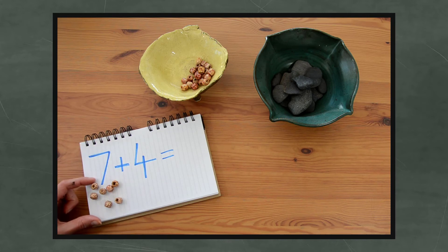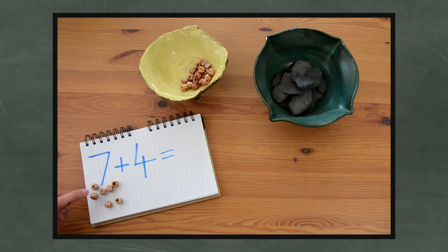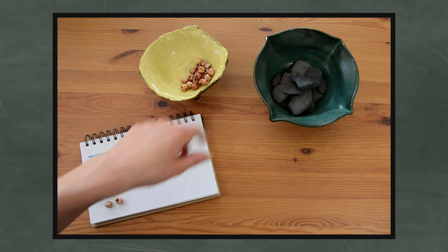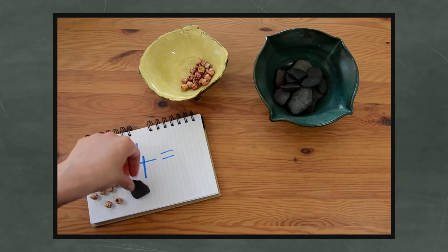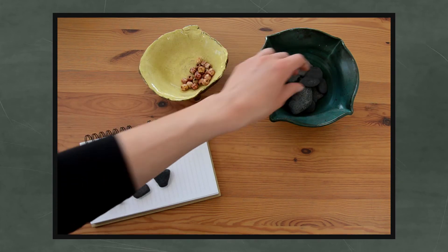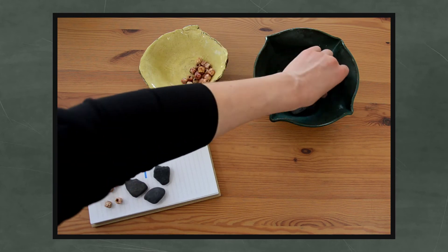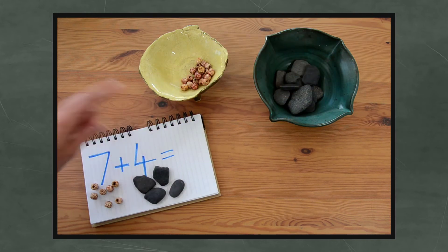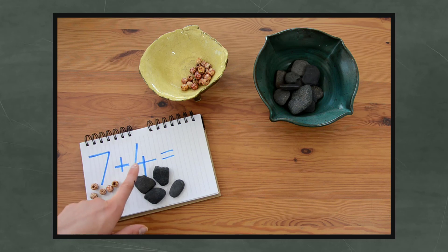Sometimes I like to just double check that I've got 7 so I'm going to count again. 1, 2, 3, 4, 5, 6, 7. Perfect. Now I need 4 rocks. 1, 2, 3, 4. So I have 7 beads, 4 rocks.